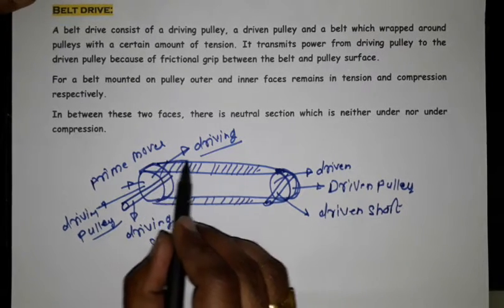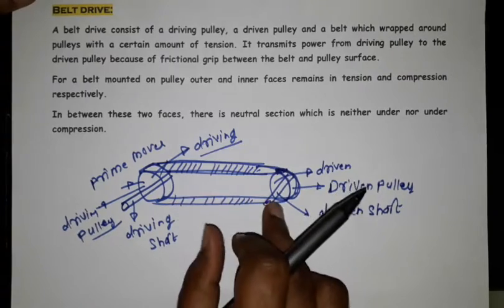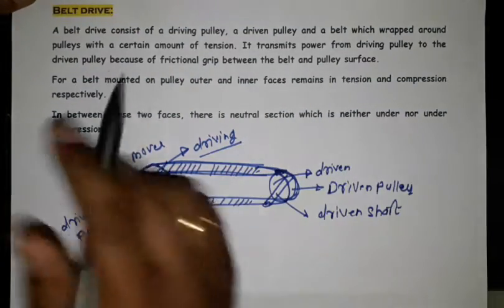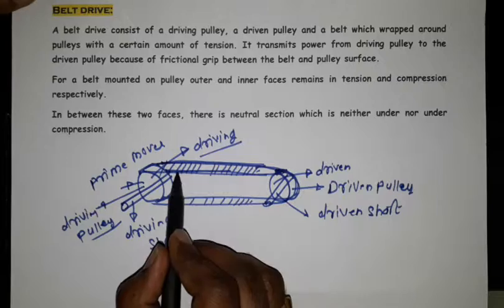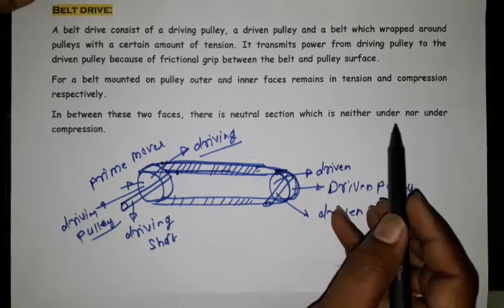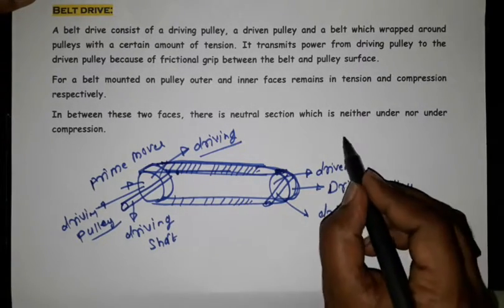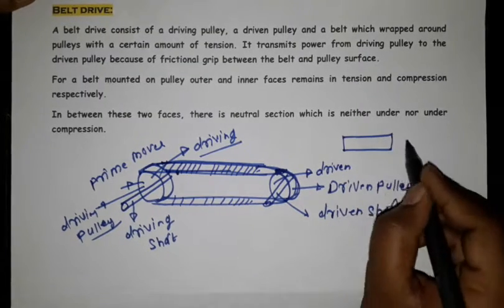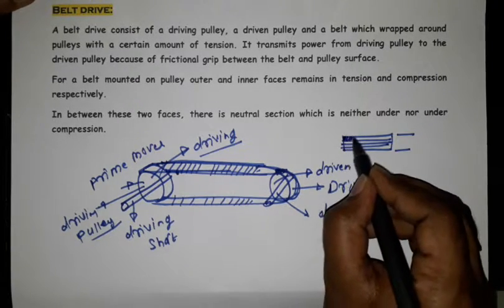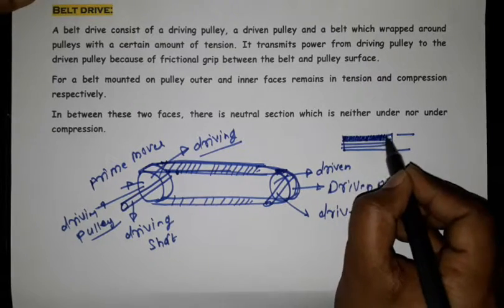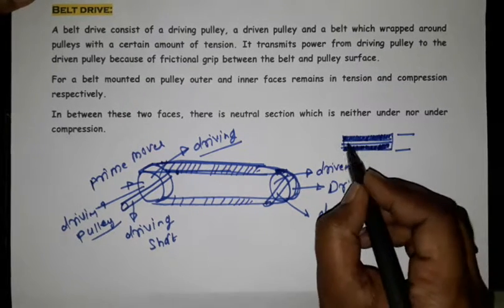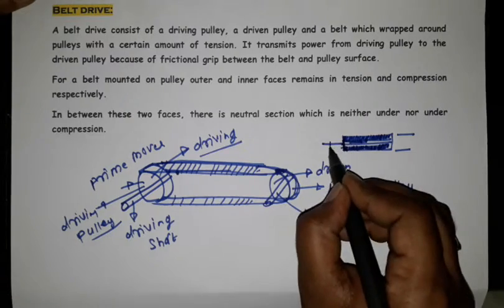Now for the belt mounted on the pulley, outer and inner surfaces remain in tension and compression respectively. In between these two faces there is a neutral section plane which is neither under tension or compression. The belt has plies, one, two, three, four plies. So the upper layer will be in tension and the lower layer will be in compression and the middle layer will be in neutral manner.